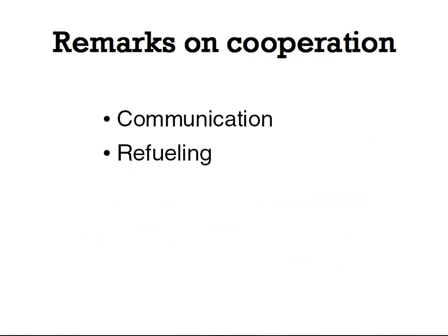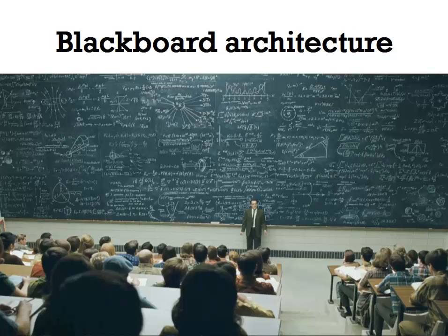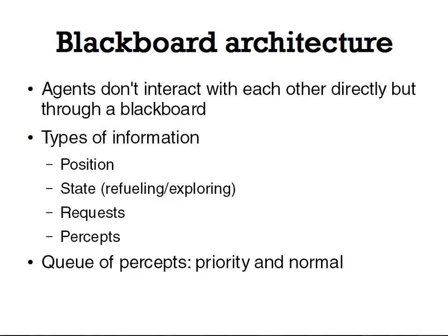This was a quick description of how we employ genetic programming to solve the problem. Before I wrap up, I want to quickly highlight two methods for cooperation which were utilized: first is communication, and second is the refueling strategy. For communication, we use a blackboard architecture. Even though blackboards can sometimes look very messy, ours is rather simple. In the blackboard model, agents don't interact with each other directly but through a blackboard. Since we are limited to three pieces of information per step, we exchange only high-level information like position or states. The rest of the channel is used for percepts — an agent can ask another agent to send it a certain percept, and agents also try to determine which objects might be useful for other agents. The sequence for sending is solved by two queues with different priority.